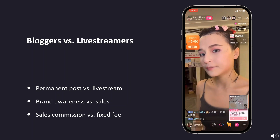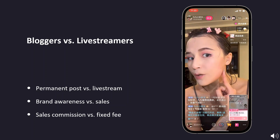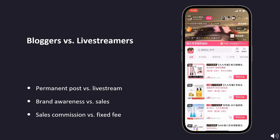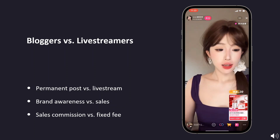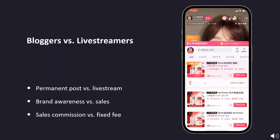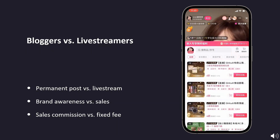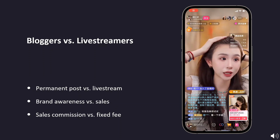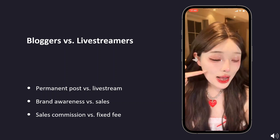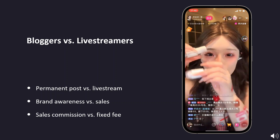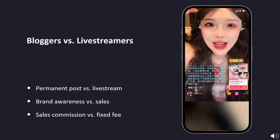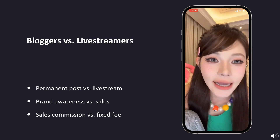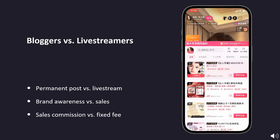Another major difference is that influencers posting videos typically ask for a fixed fee paid up front and sometimes a small commission from sales. For example, a blogger with 100,000 to 500,000 followers might ask for a 30,000 RMB fee and a 5% sales commission. Live streamers, on the other hand, primarily work on commission and often ask for around a 20-30% sales commission. A fixed fee is usually required for the first collaboration but will be very low, meaning you can do repeat promotions without any fixed costs with live streamers.